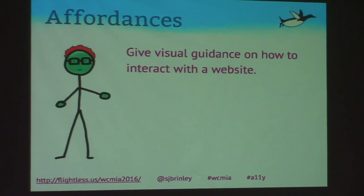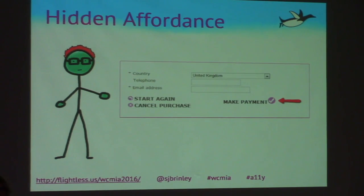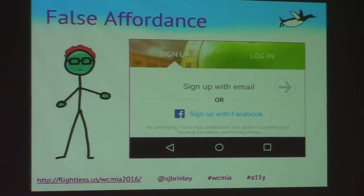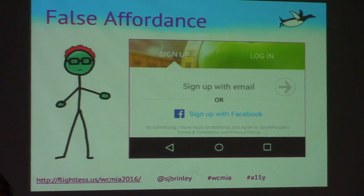Affordance gives visual guidance on how to interact with a website. Hidden affordance is when it's not obvious how to take action — like a 'Make Payments' area that doesn't look like a button or link. False affordance is when something looks like it should do something but doesn't: for example, an app with an arrow button next to a 'sign up with email' field — clicking the arrow did nothing because you're actually supposed to click the gray text to get a cursor. That's false affordance.